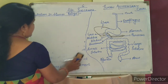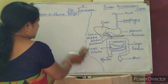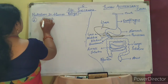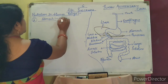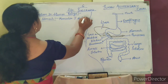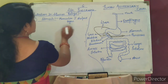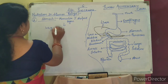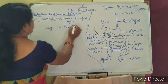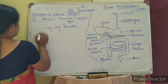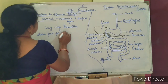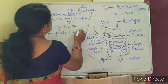Our next part is the stomach. Food enters the stomach. The stomach is a muscular, J-shaped organ with a bag-like structure. It stores food for about 3 to 4 hours.